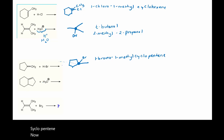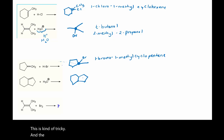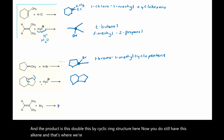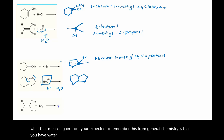Now this reaction here — this isn't one that I'm going to expect you to name the product of. This is kind of tricky, and the product is this bicyclic ring structure here. You do still have this alkene, and that's where we're acting. The H₃O⁺ — this is the hydronium ion. You're expected to remember from general chemistry that this is water and acid, so we form that hydronium ion.